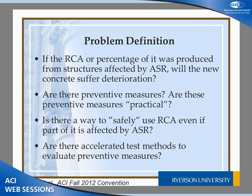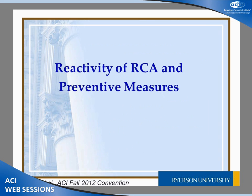For example, if supplementary cementing materials are used as a preventive measure — if 15% silica fume or 15% metakaolin stops the reaction, it's good, but it's not practical for workability and other concrete properties. So we want to make sure that any mitigation is practical and does not have negative effects on the other properties of the concrete. Another question is whether there is a way to safely use RCA even if part of it is affected by ASR, since RCA collected from different locations may include material from ASR-affected structures. And finally, are there accelerated test methods? All these were covered in three projects over the last five years.